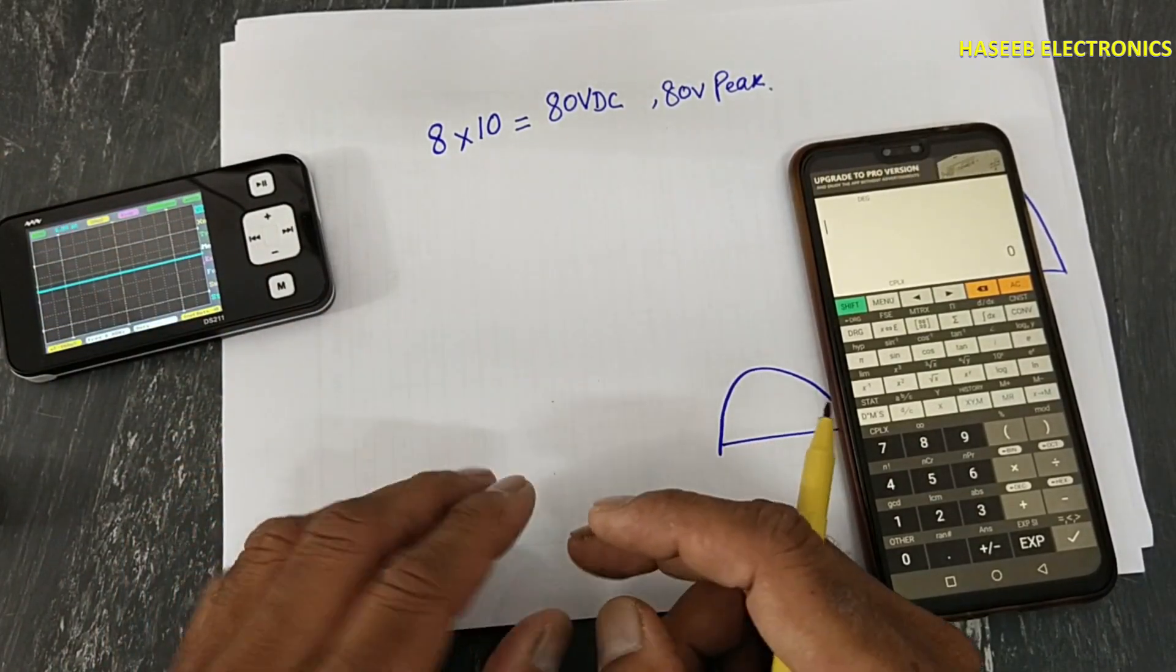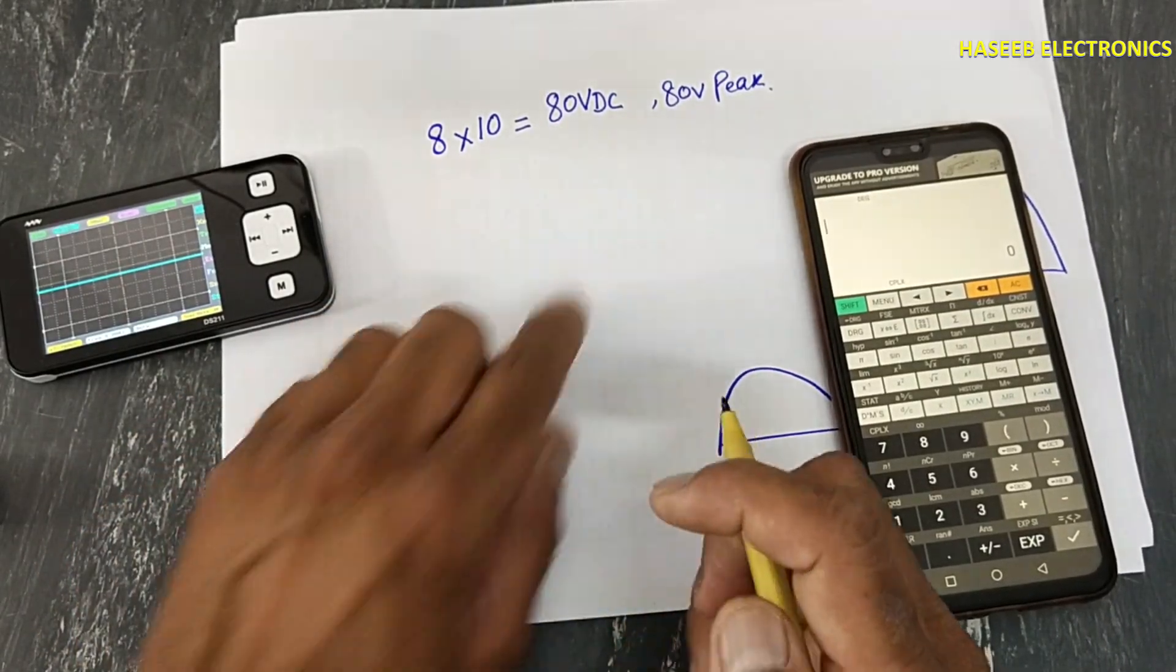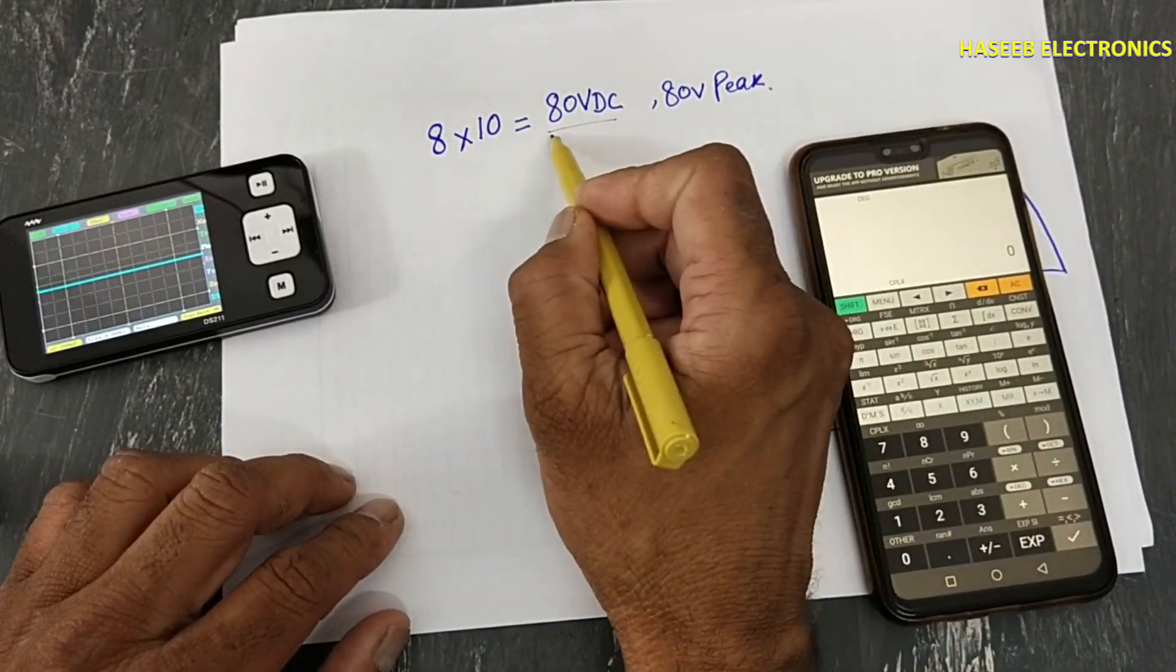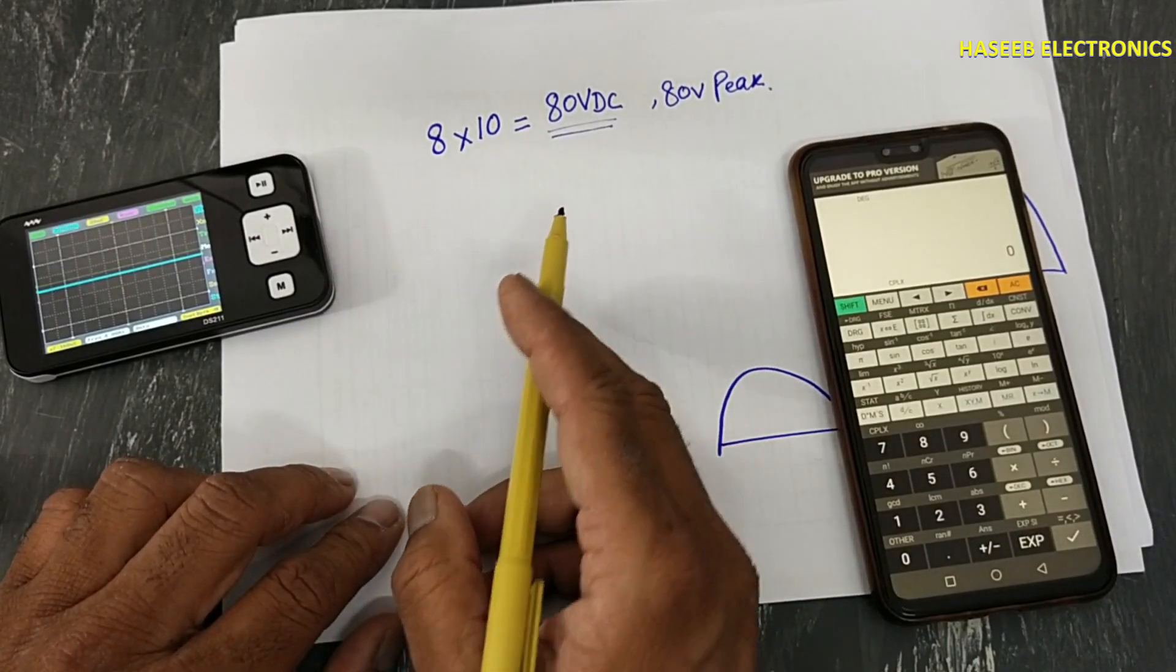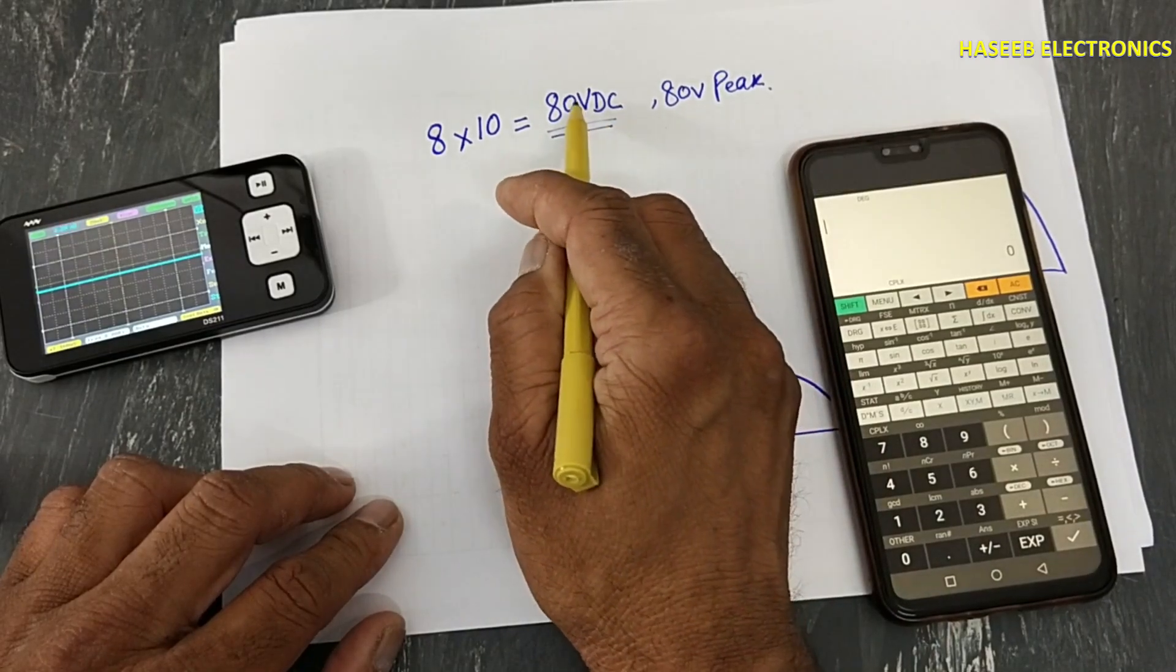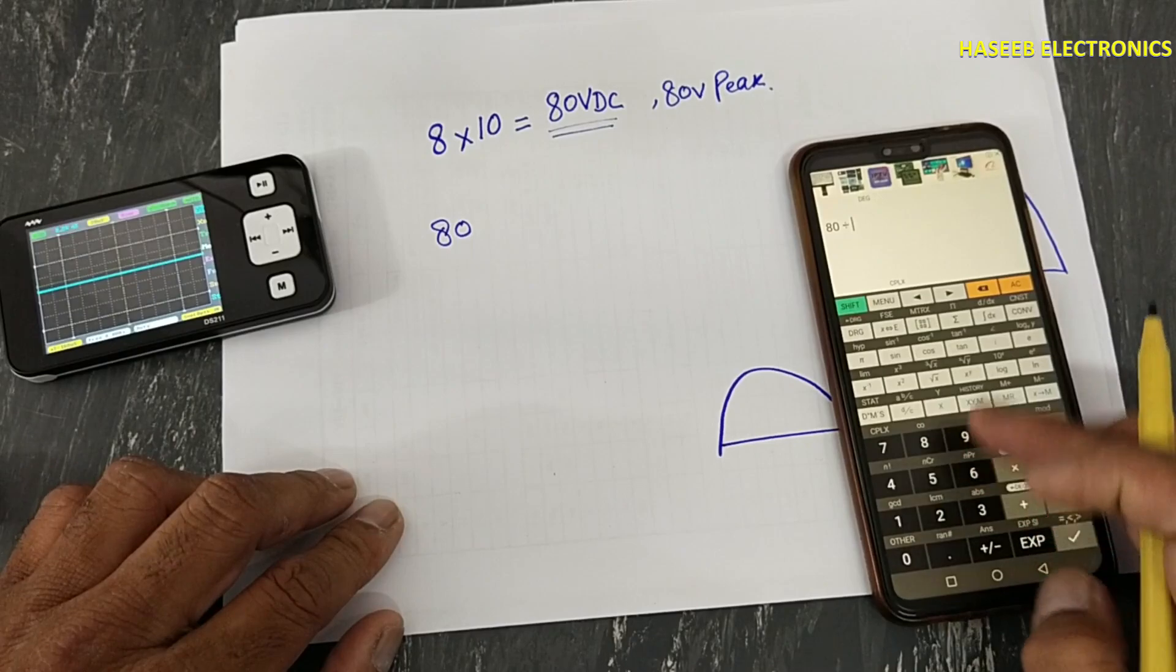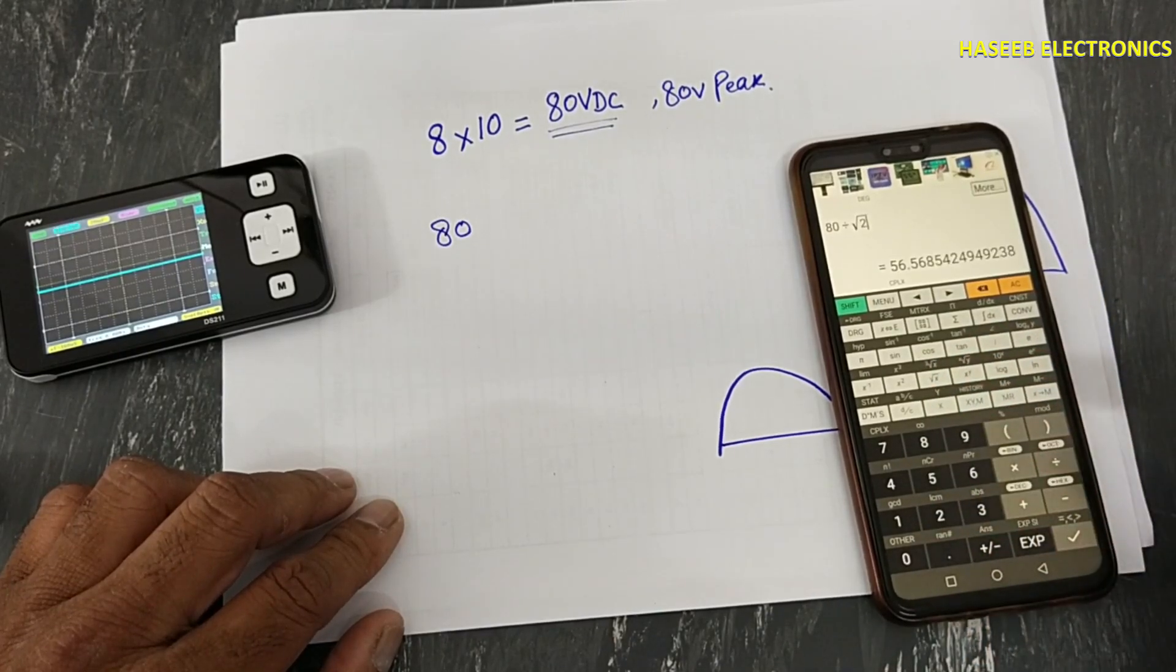And then we can find what is the maximum value. Here, our oscilloscope is capable to test 80 volts DC or 80 volts peak. Now convert this voltage into RMS. Divide it by under root 2.